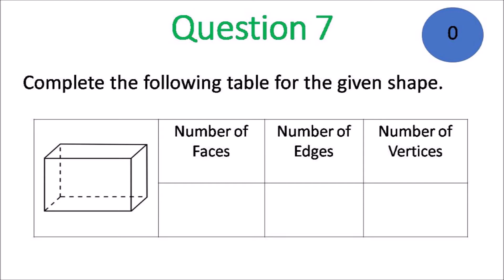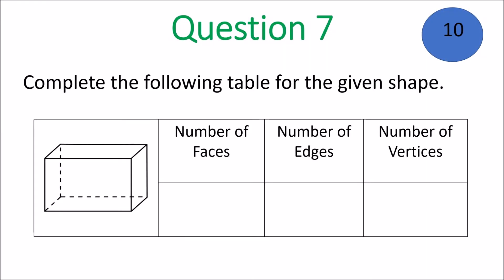You should be wrapping up that question. Question 7. Complete the following table for the given shape. Give the number of faces. Give the number of edges. And give the number of vertices. You must know what faces, edges and vertices mean. What those three terms refer to. Count them up. Count up what you need to count up. Put your numbers in. Get cracking, Grade 6.